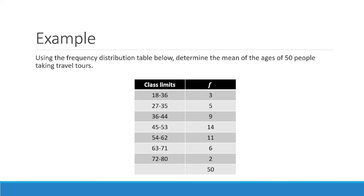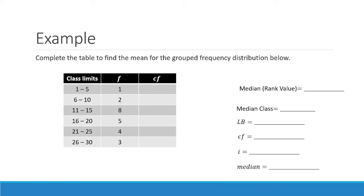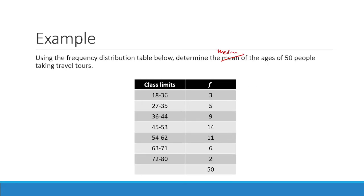We have a frequency distribution table — we need to compute the median of the ages of 50 people taking travel tours. Let's do step one: we need to identify the median rank and median class. Using the formula, n is 50, so 50 divided by 2 equals 25. That is our median rank value. Next, we construct the less-than CF.